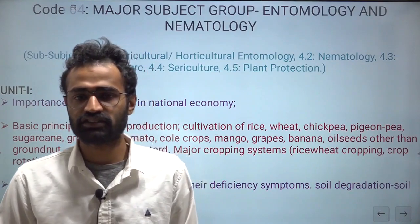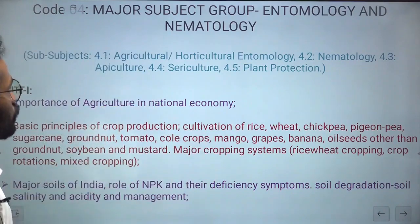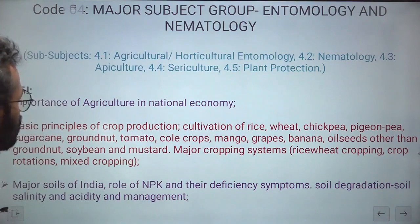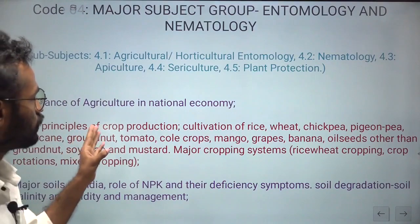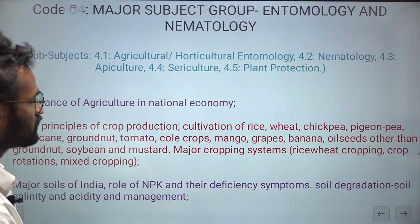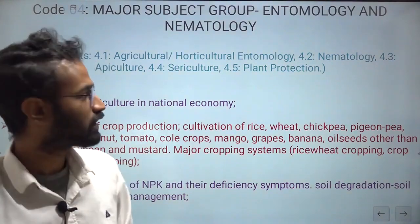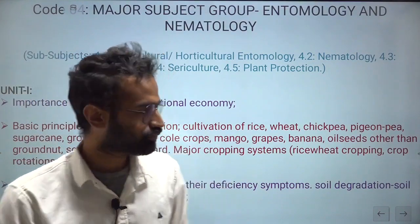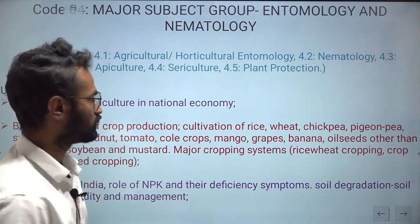The subject code for entomology and nematology is Code 04. Within this, there are five sub-subjects: agricultural or horticultural entomology, nematology, apiculture, sericulture, and plant protection. These represent the different MSc streams across universities, with agriculture or horticulture entomology being the major contributor.